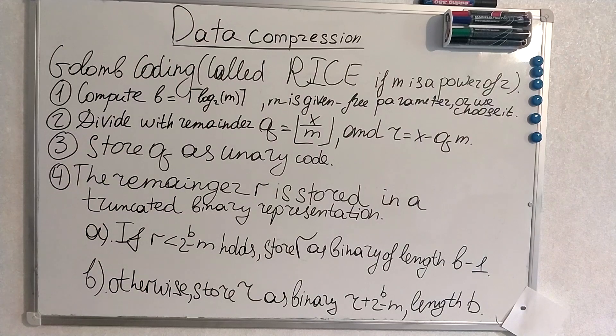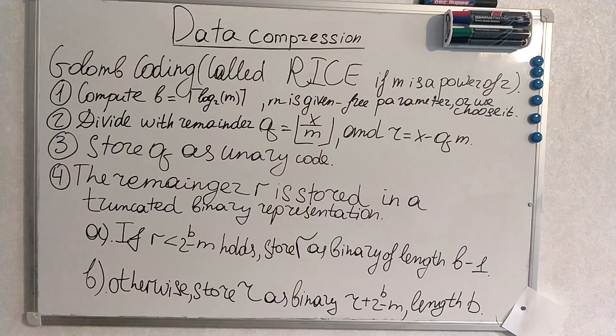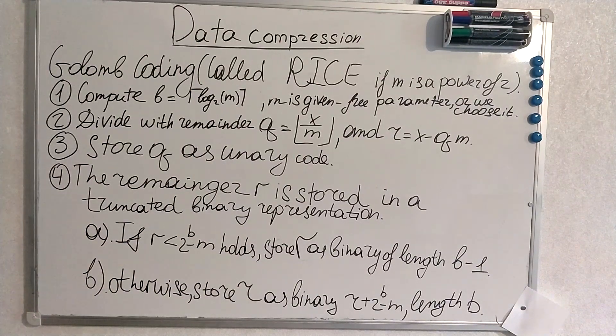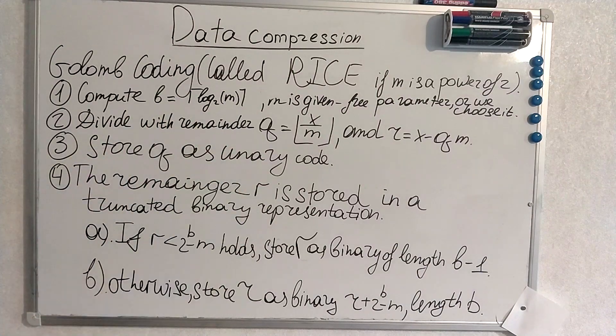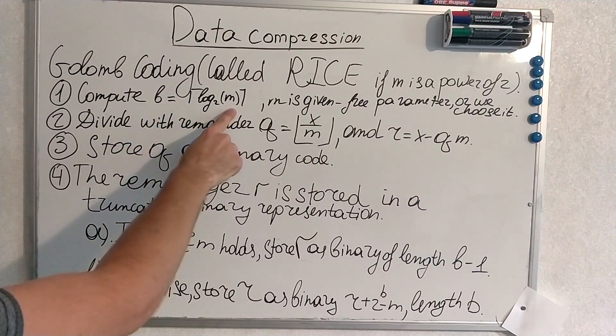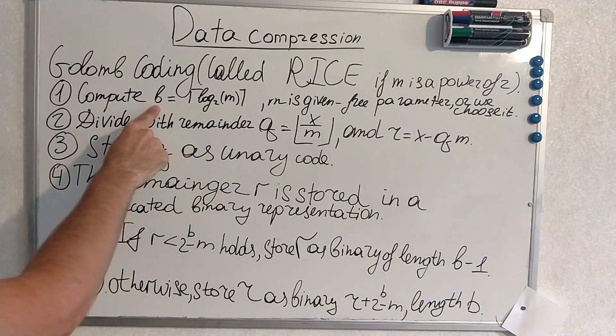At the very beginning we are always given with a number we are going to encode because it's integer encoding and m. m is a free parameter. We choose it or if you make or solve some tasks, m is always given. First of all I have to explain what we have here. We have two variables b which depends on m. m is given. We calculate b.